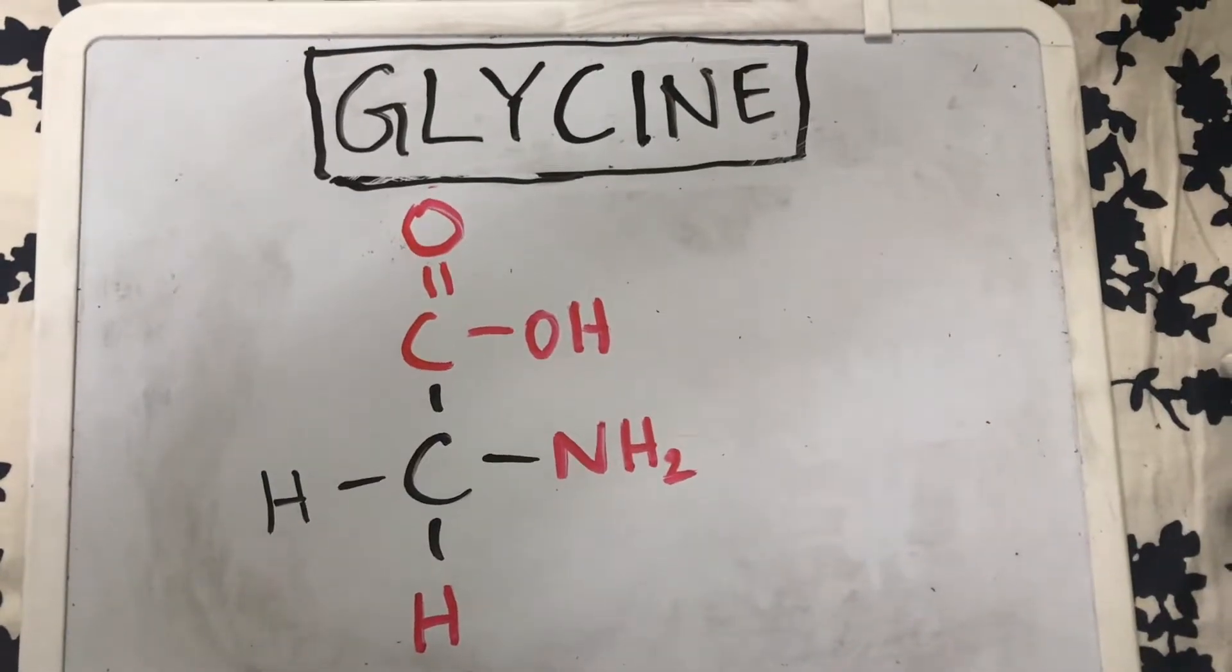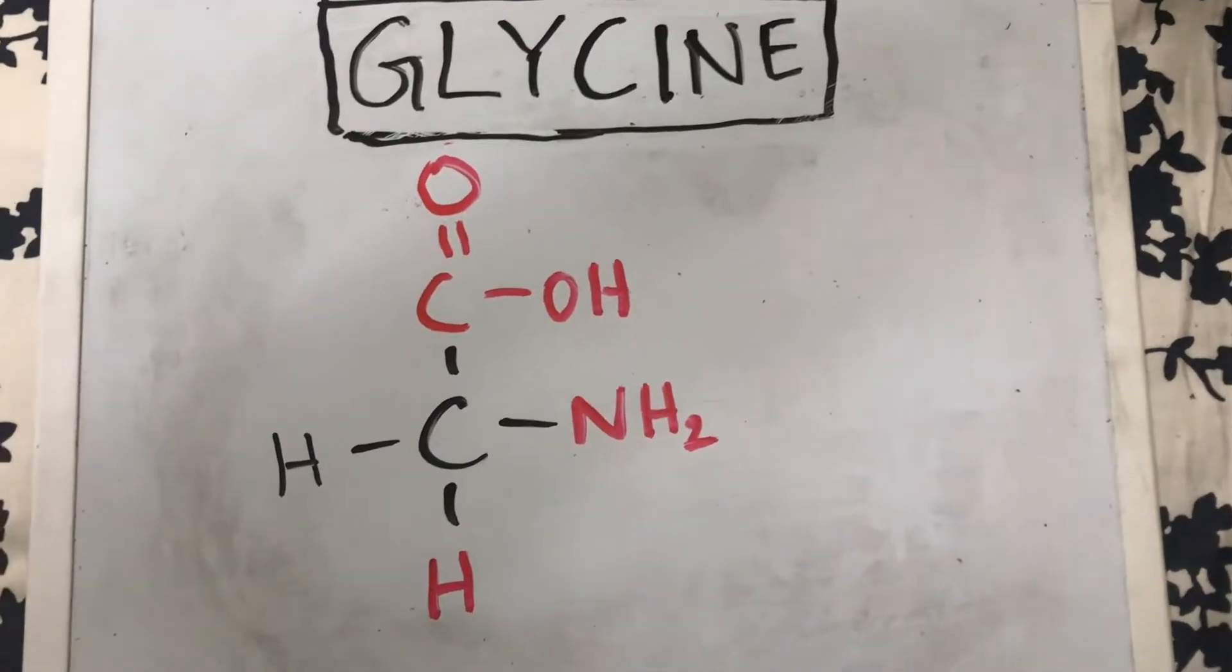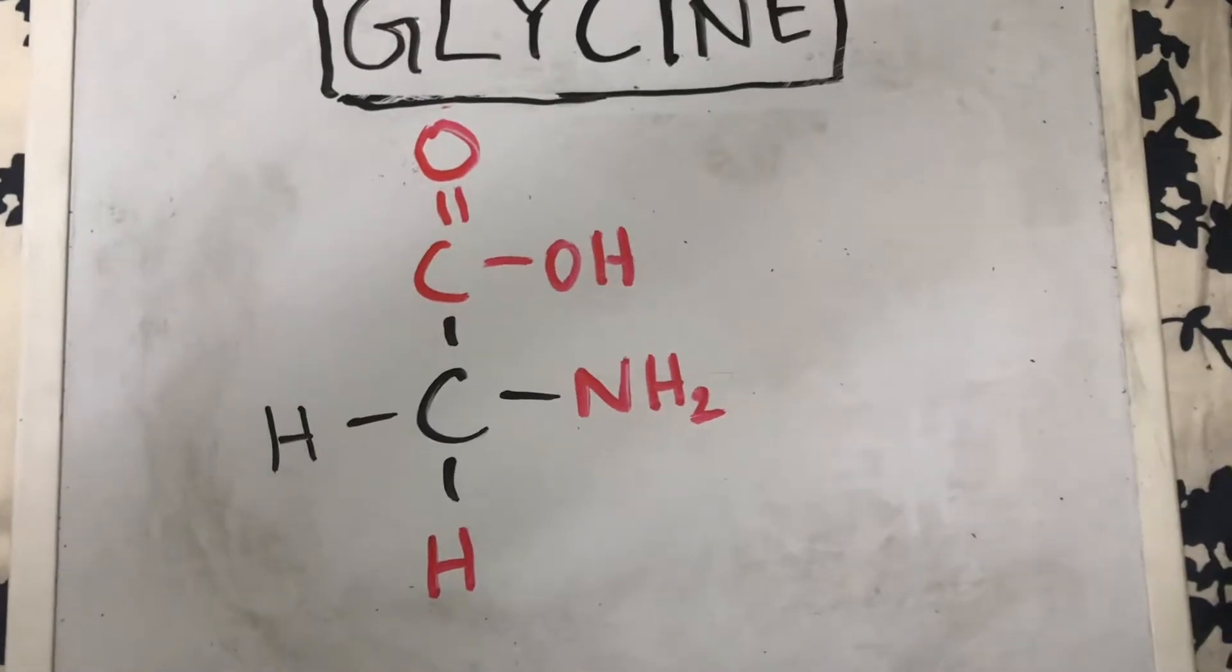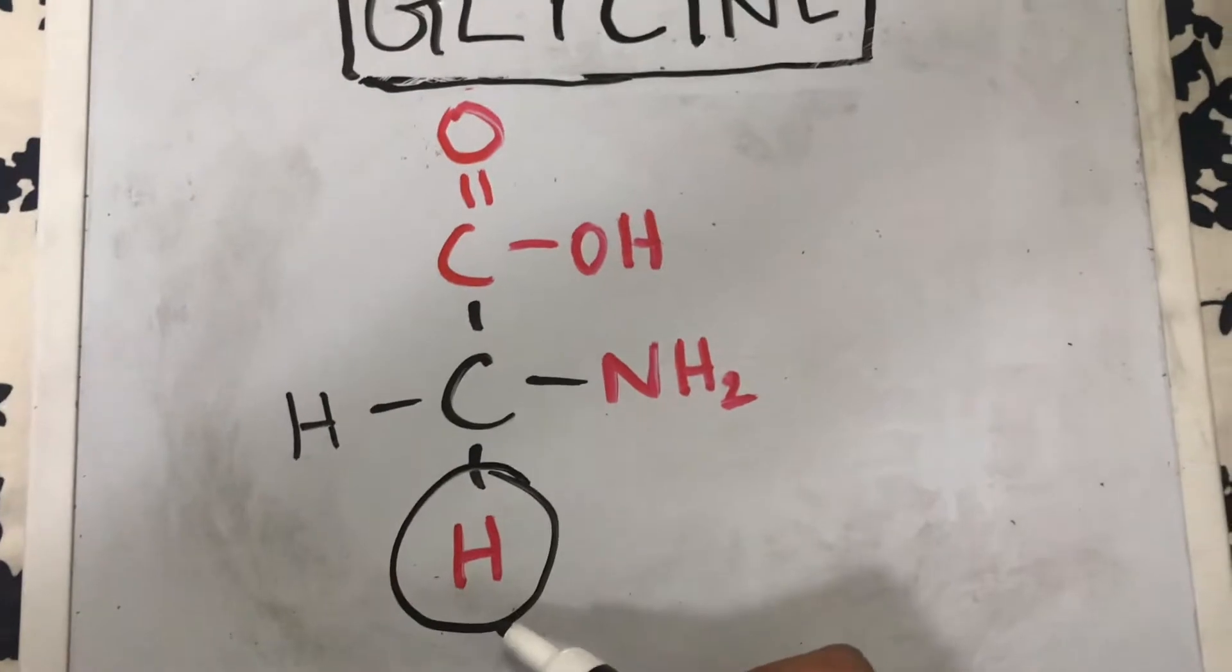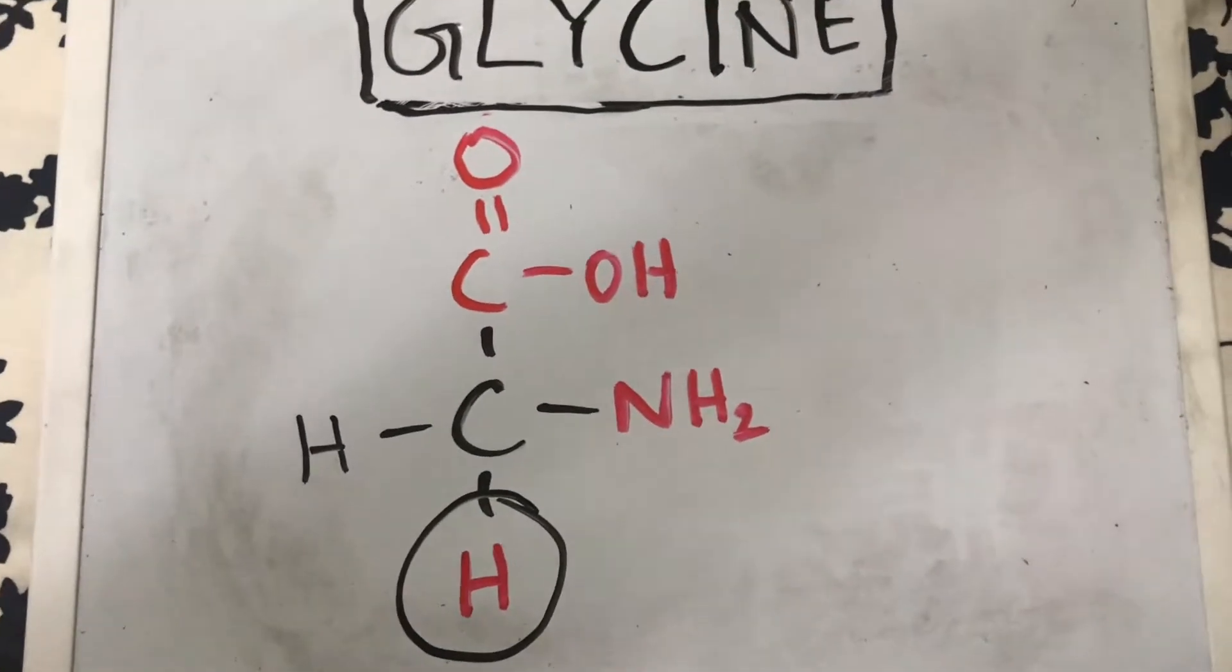Hey guys, so today we're going to talk about the structure of glycine. Glycine is the simplest amino acid because of its very simple side chain, the hydrogen. Before I show you how to draw the structure of glycine...